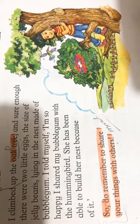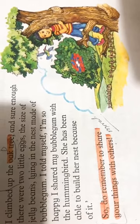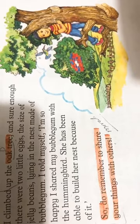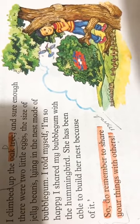The boy was happy about the sharing. After two days, the bird came and called the boy to show him the bubble gum nest which was made by the bubble gums with the help of the boy.